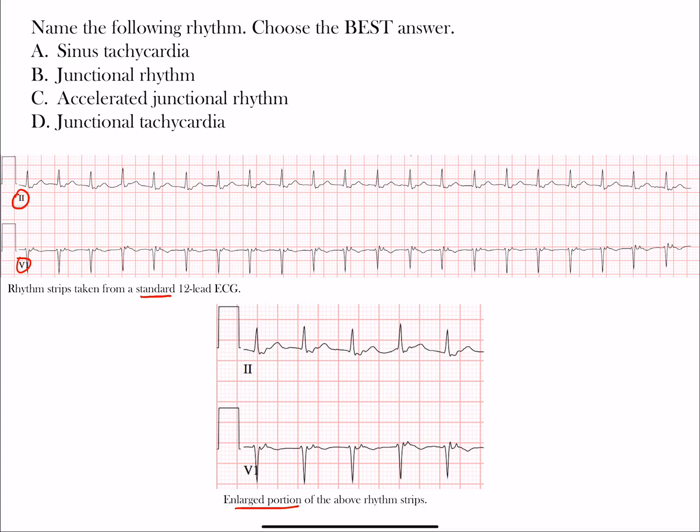Hopefully you had a chance to choose one of these four. Notice we have one choice mentioning sinus rhythm - sinus tachycardia. All the other choices are junctional rhythms in some form. To differentiate, with sinus rhythm you should see P waves.